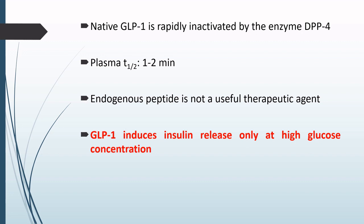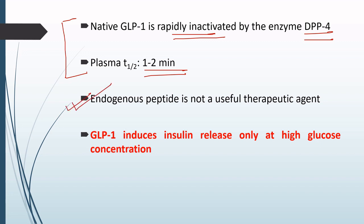The native GLP-1 — that is, the GLP-1 already present within our body — is rapidly inactivated by the enzyme DPP-4, and the plasma T-half of native GLP-1 is 1 to 2 minutes. Because of these two reasons — degradation by DPP-4 and a very low plasma half-life — the endogenous peptide is not a useful therapeutic agent. This is why we cannot use native or endogenous GLP-1 as a therapeutic agent.